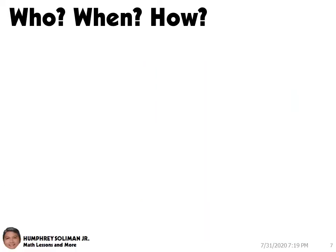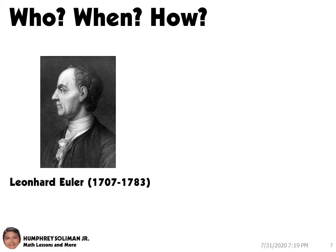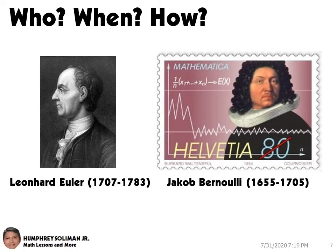The constant E was discovered in the early 18th century by mathematician Leonard Euler. Euler was trying to solve a problem first proposed by another mathematician, Jacob Bernoulli, half a century earlier.